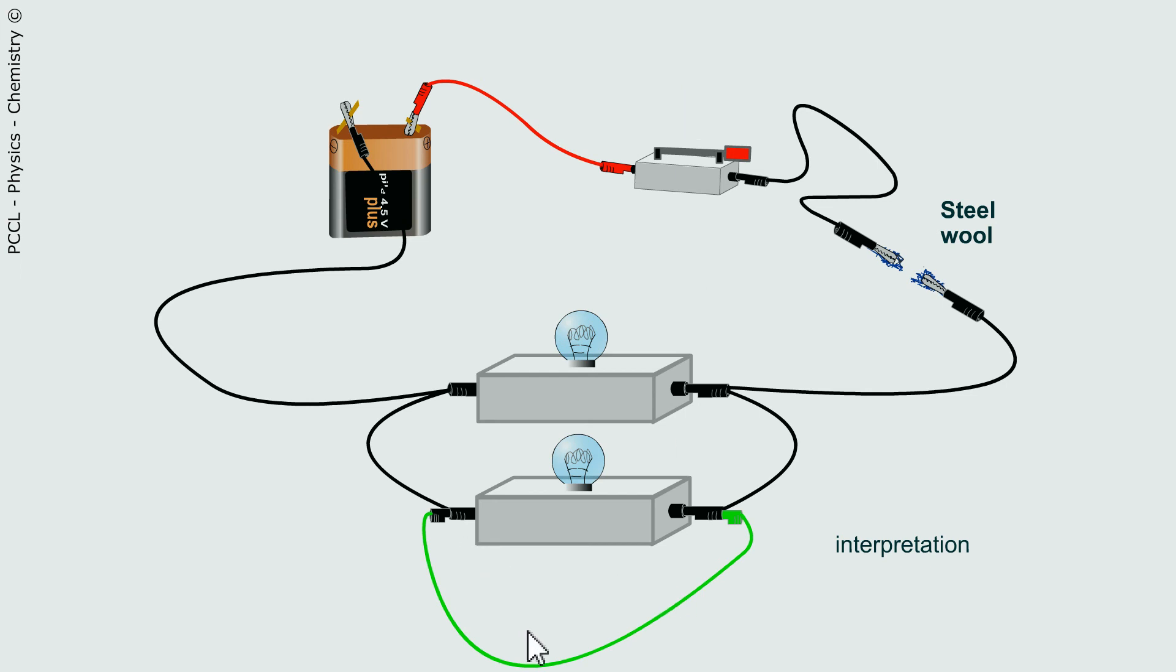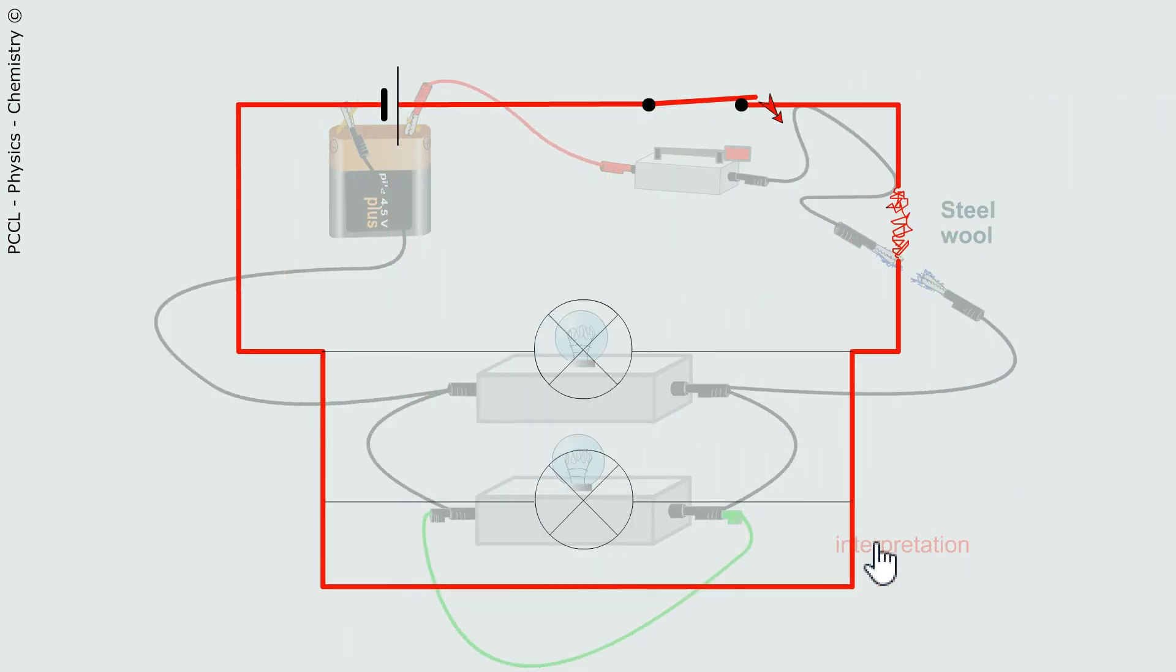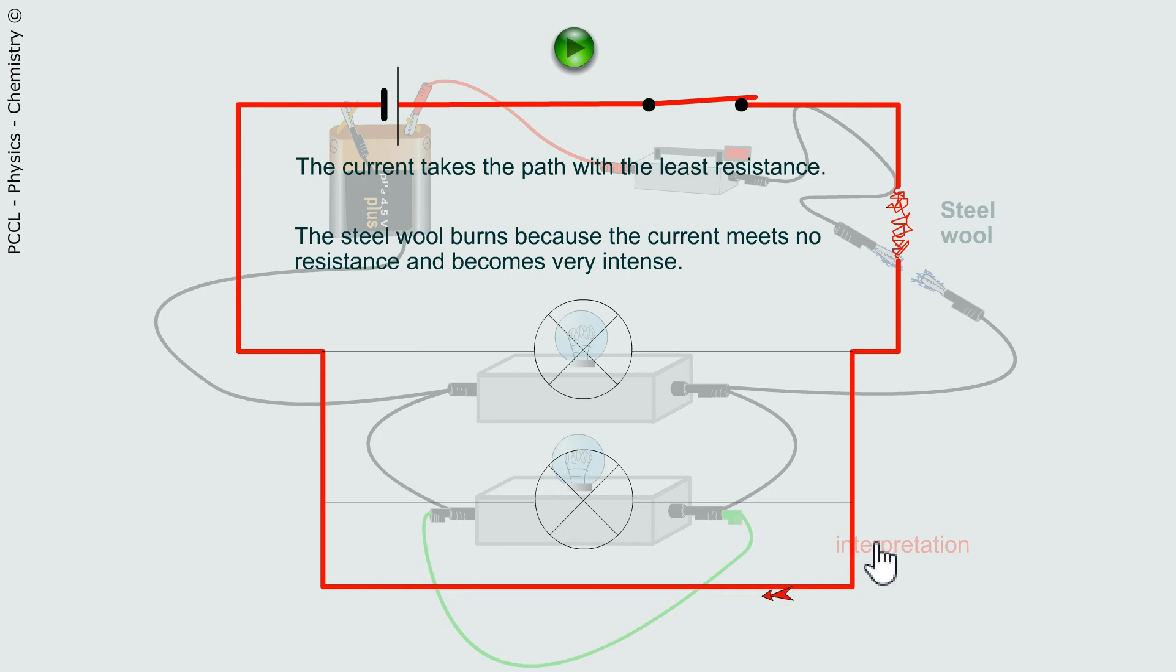Except that this wire, by short-circuiting one of the two bulbs, short-circuits the other bulb and the generator. That is to say that there is nothing between the positive terminal and the negative to limit the current, which becomes very intense and which can burn the steel wool.